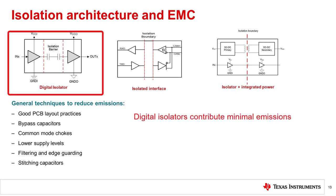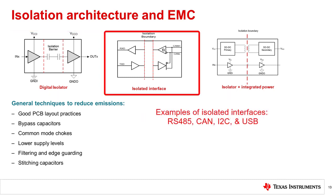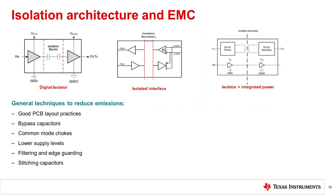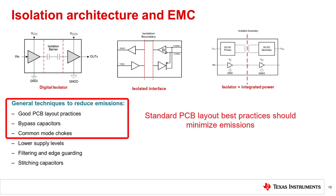In general, digital isolators contribute minimally to system emissions. For capacitive isolators, high-frequency carriers are used to carry signals across the barrier, while for inductive isolators, current is driven across a transformer. Isolators with integrated communication devices, such as RS-485, I2C, and CAN, can add the consideration of additional signal lines. Good PCB layout practices, bypass capacitors, and common mode chokes are the primary methods used to keep the overall emissions contribution at a minimum.